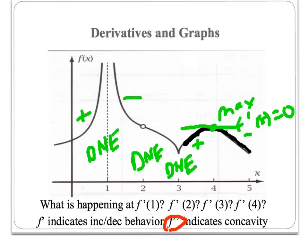If we start to look at the second derivative function, which relates to concavity, you would notice that the second derivative would be positive here because it's concave up, and positive here because it's also concave up. But down here it would be negative because it's concave down — the curve is facing down. Likewise, it would be negative all the way throughout the rest of the function. This is how we analyze graphs by thinking about the first and second derivatives: the first derivative captures increasing or decreasing behavior, and the second derivative looks at concavity.